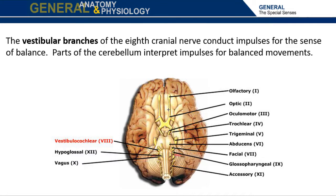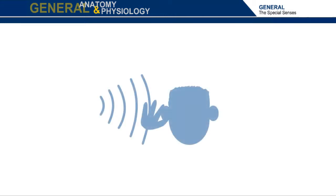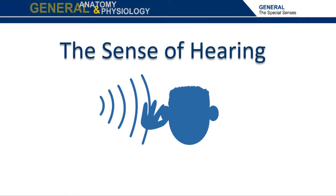The vestibular branches of the eighth cranial nerve conduct impulses for the sense of balance. Parts of the cerebellum interpret impulses for balanced movements. You have completed this learning activity, the sense of hearing.